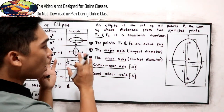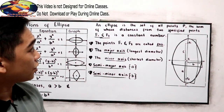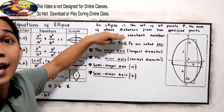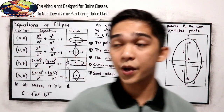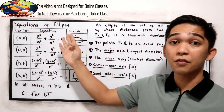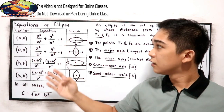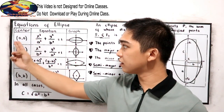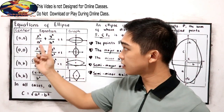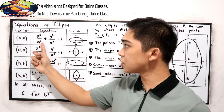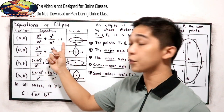Those are the mathematical terms you are going to encounter in ellipse. And of course, we have the equations of ellipse. If we have the center at (0, 0), the equation is x squared over A squared plus y squared over B squared is equal to 1.